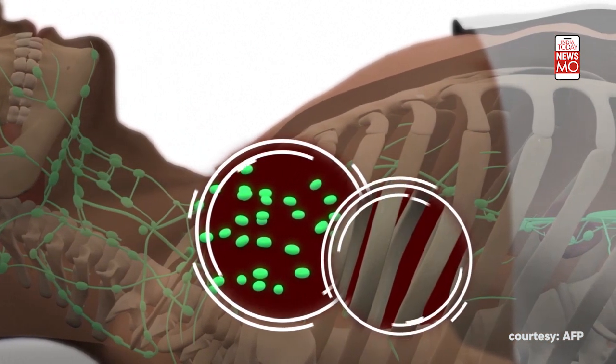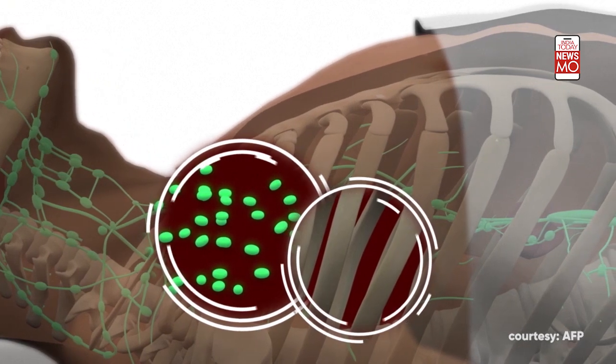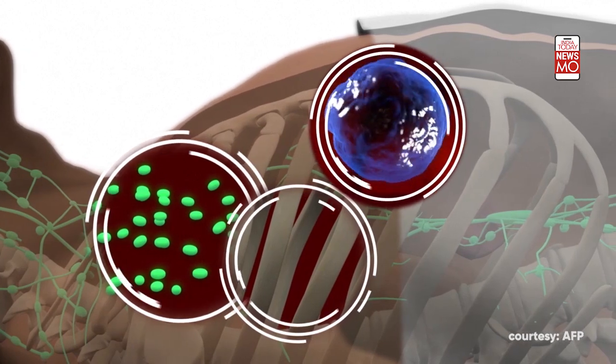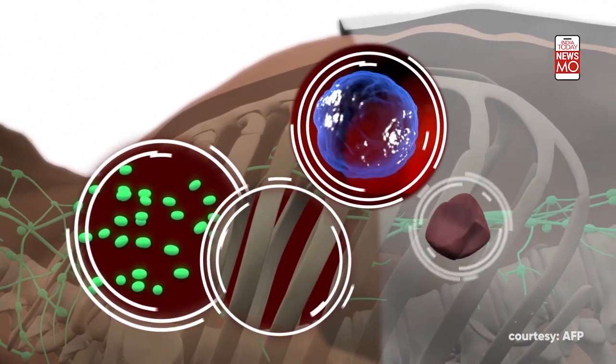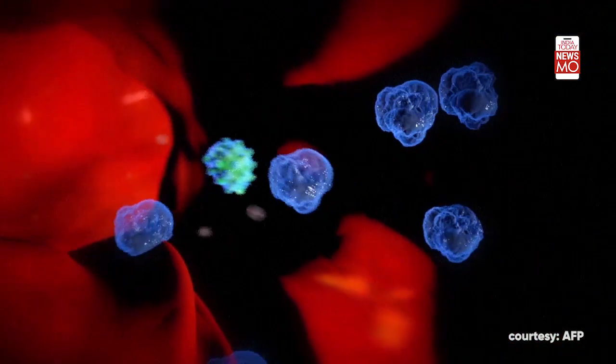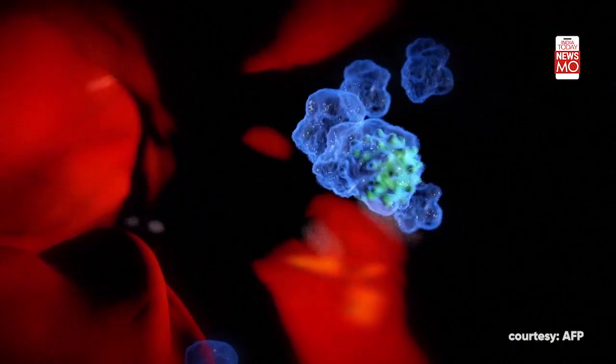Lymph nodes filter microorganisms from the blood. Bone marrow produces stem cells that can become red and white blood cells. Macrophages, so-called eating cells, move around the body hunting for pathogens. The spleen stores and produces white blood cells.